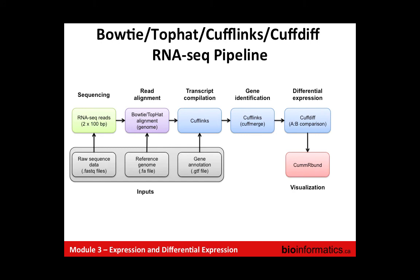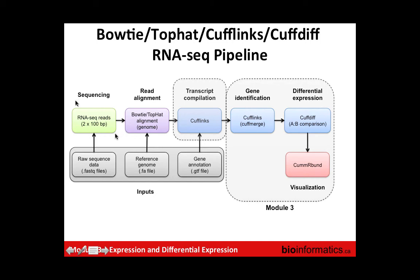The tutorial we could start now or after a break. Looking at the workflow: we've done raw sequence data, run Bowtie and TopHat to get alignments, and now we're going to do transcript assembly with CuffLinks and expression estimation. We'll use CuffMerge to merge CuffLinks assemblies from different samples, then CuffDiff to compare samples, and finally CummeRbund to visualize the results.